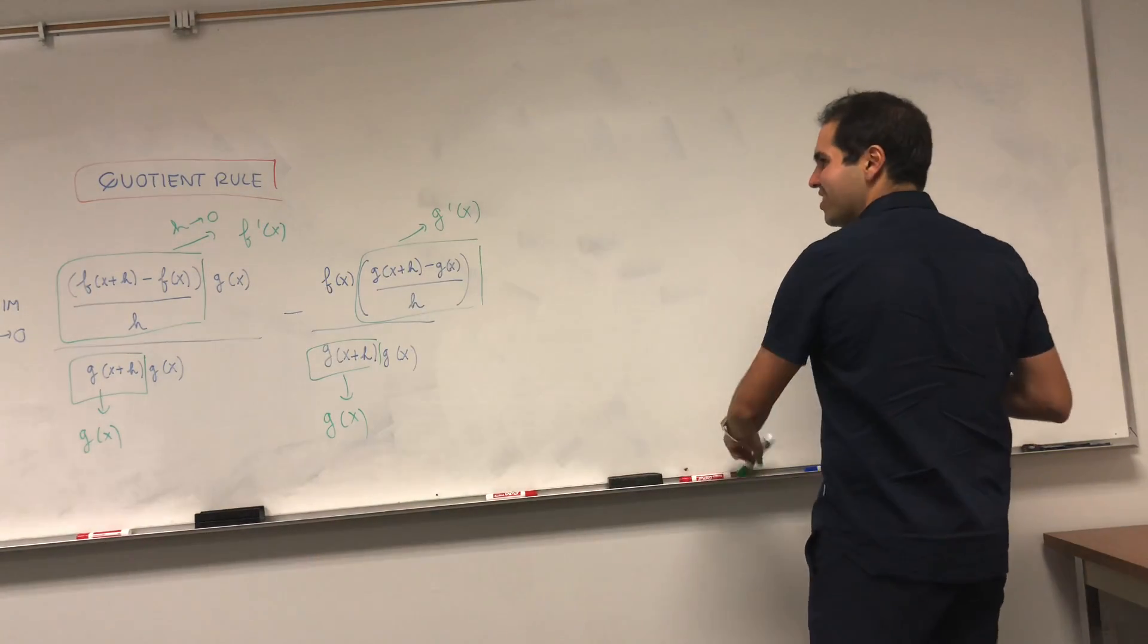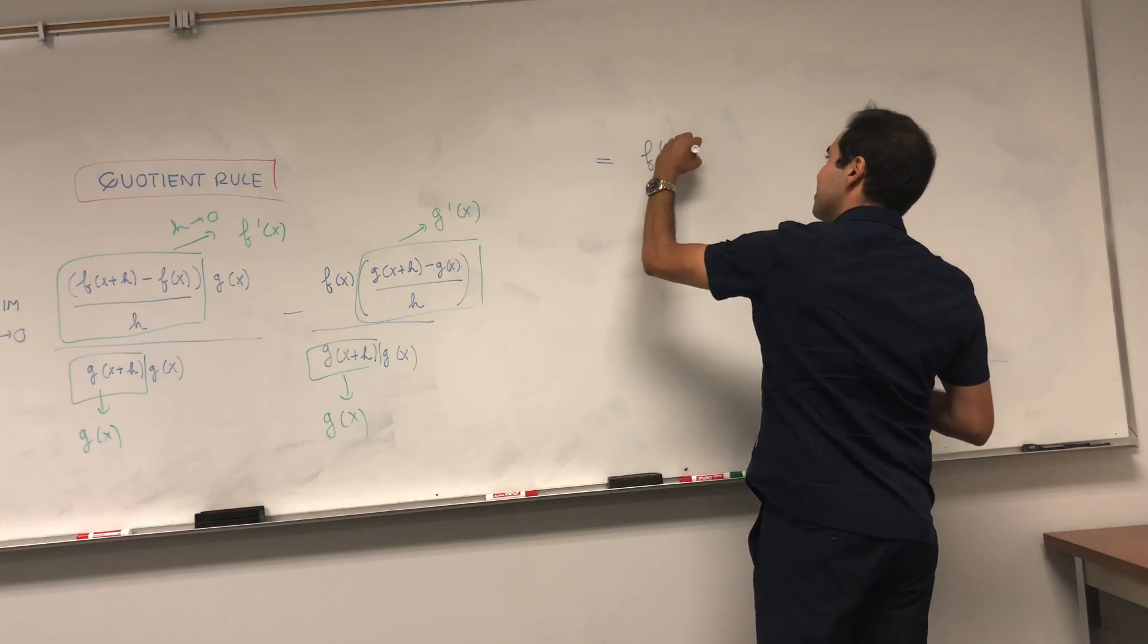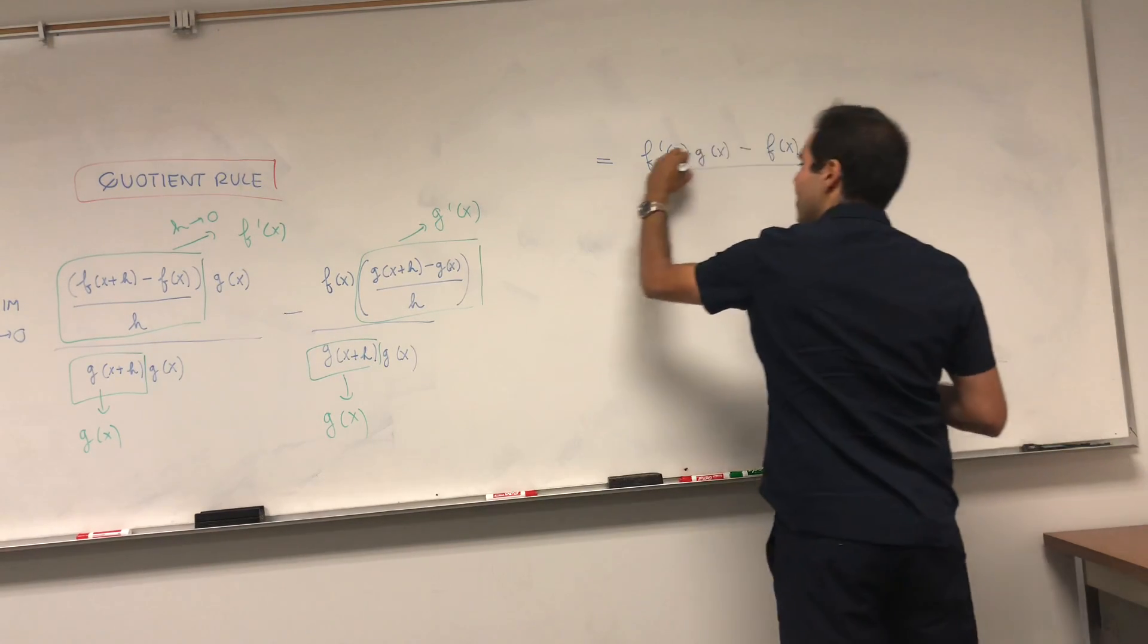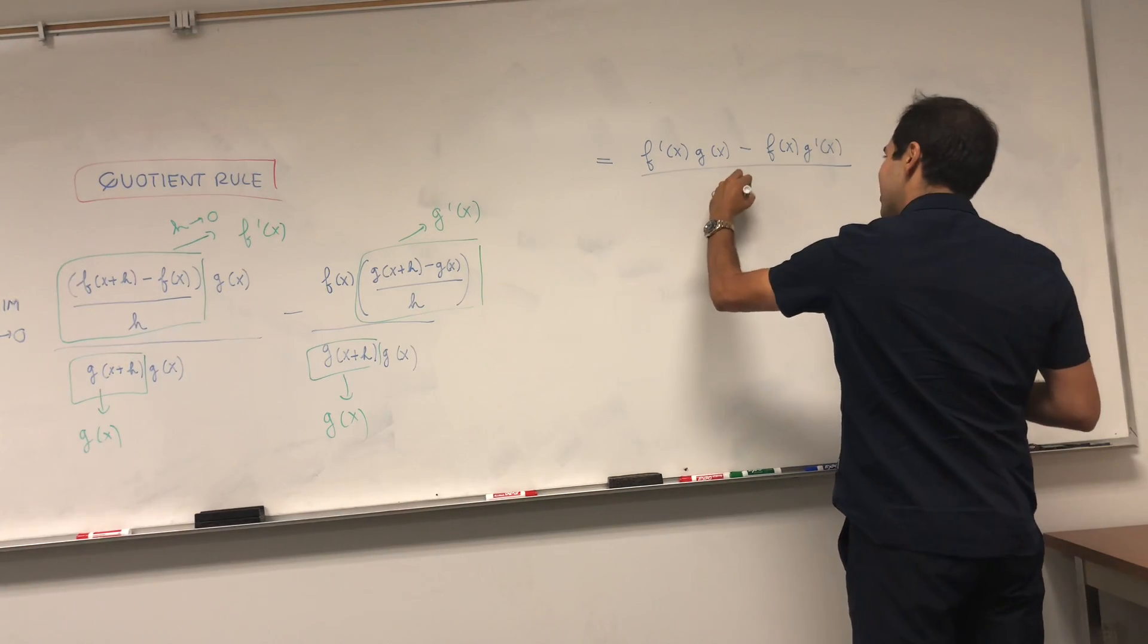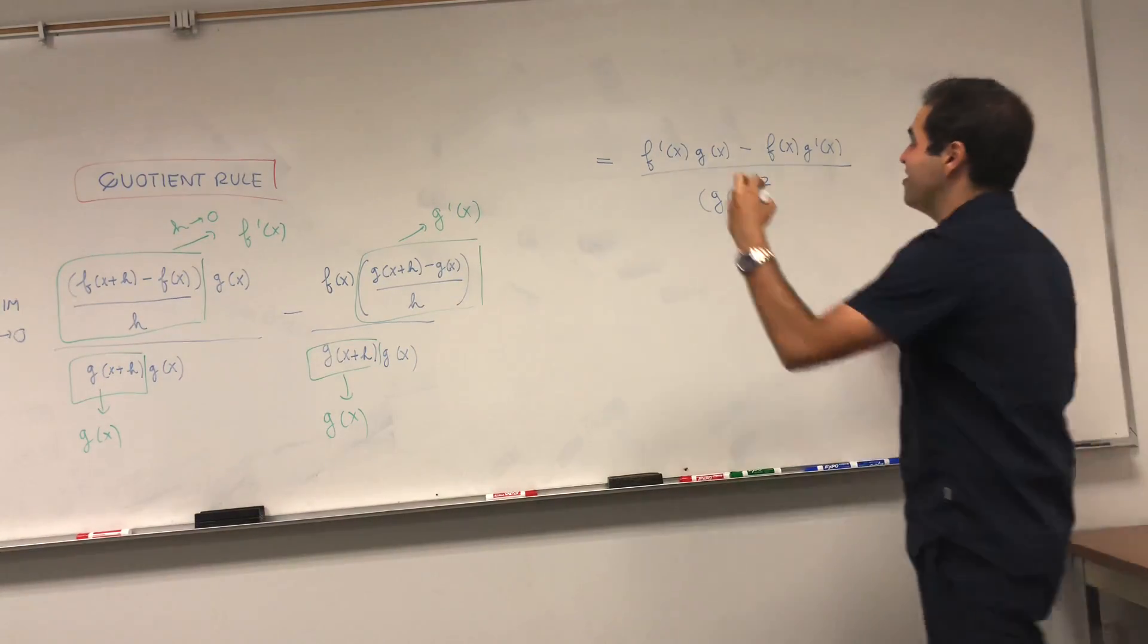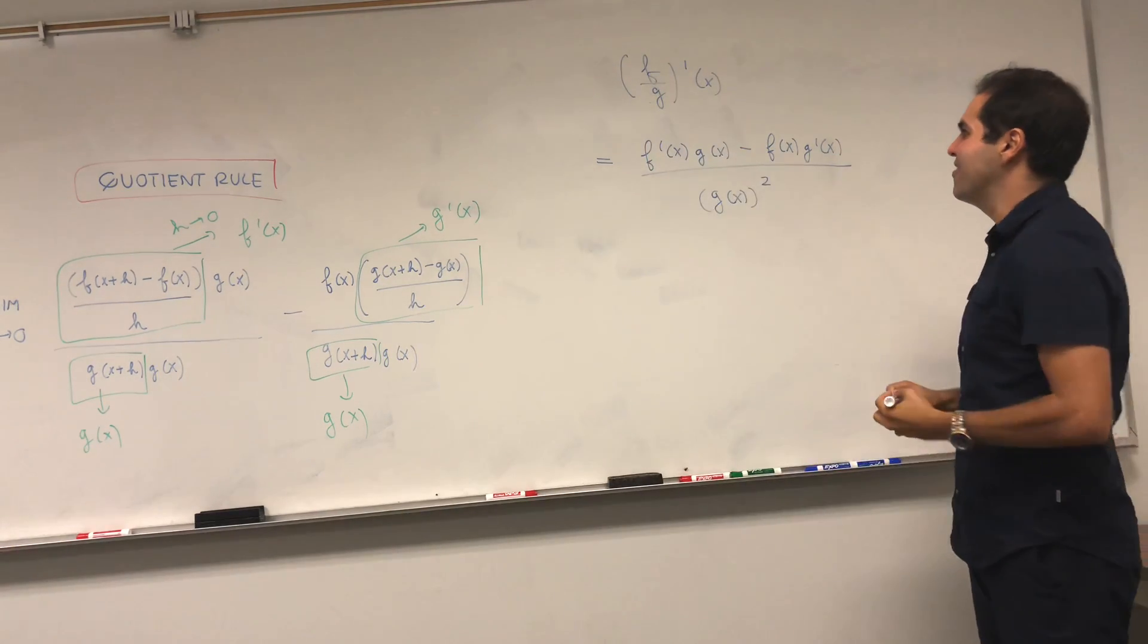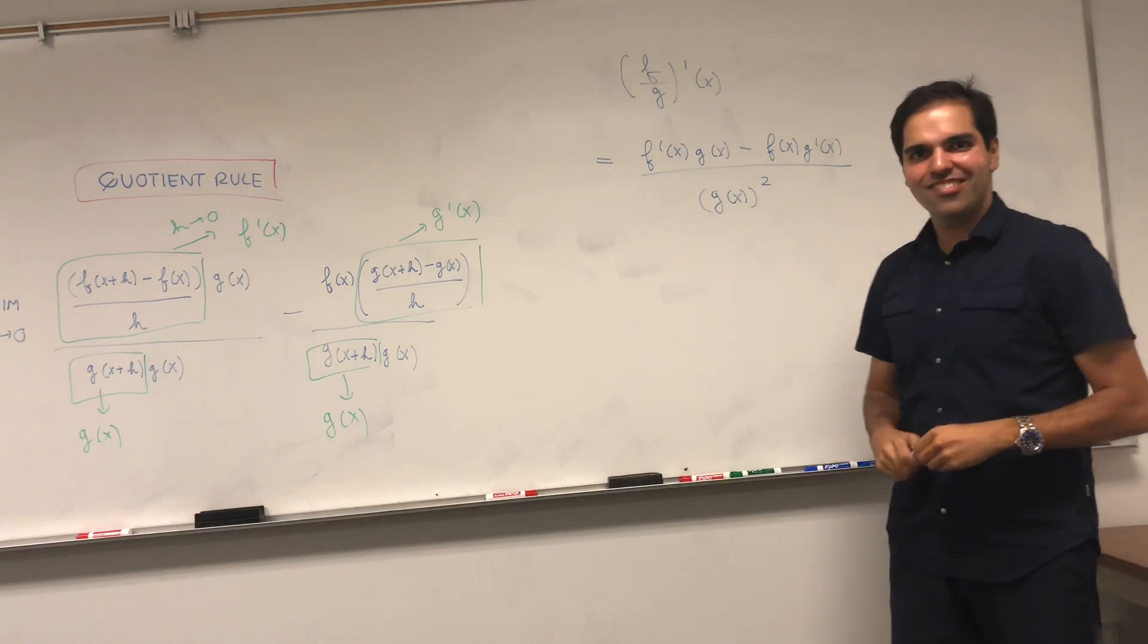So, after this whole derivative explosion, we're left with simply f prime of x times g of x minus f of x times g prime of x, divided by g of x times g of x, which is just g of x squared. So, in the end, what have we shown? We've shown that, in fact, the derivative of f over g at x is just f prime of x times g of x minus f of x g prime of x over g of x squared. How cool is that?